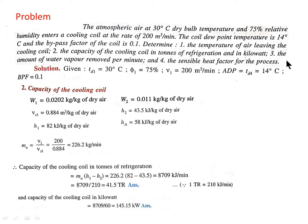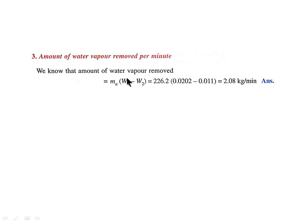The amount of water vapor removed per minute is calculated using the formula MA × (W1 − W2), where W1 is the initial specific humidity and W2 is the final specific humidity at point 2. The difference between these two terms gives the actual moisture removed due to the dehumidification process. By putting all values, the amount of water removed from the air equals 2.08 kg/min.